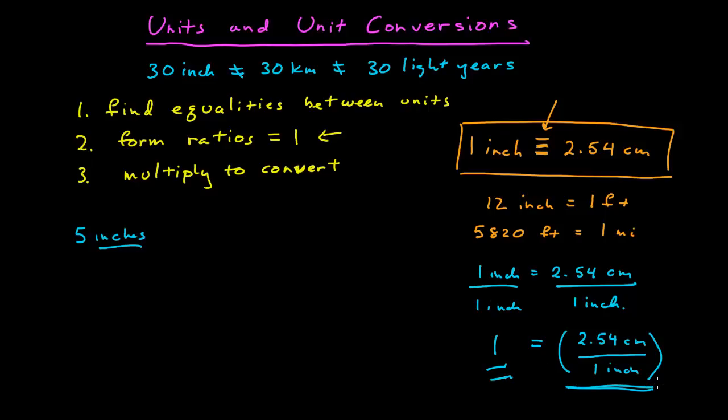equal to the number 1, I can multiply this ratio by anything I want without changing the value. So I can come up here and multiply 5 inches by 2.54 centimeters over 1 inch. Inches cancel, I multiply my numbers, and I get 12.7 centimeters. Okay. Well, that was pretty simple.